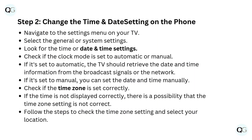Step 2: Change the time and date setting on the phone. Navigate to the settings menu on your TV and select the General or System settings. Look for the Time or Date and Time settings. Check if the clock mode is set to automatic or manual. If it's set to automatic, the TV should retrieve the date and time information from the broadcast signals or the network. If it's set to manual, you can set the date and time manually.